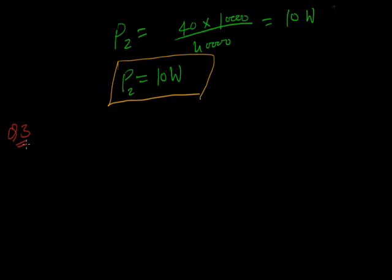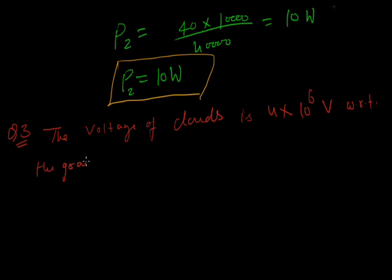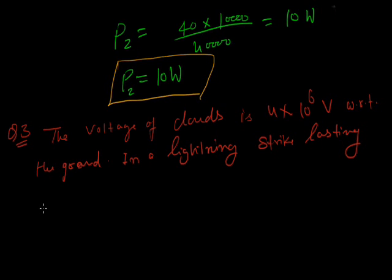A voltage of clouds is 4 into 10 raised to the power 6 volt with respect to the ground in a lightning strike lasting 100 milliseconds. The charge of 4 coulomb is delivered to the ground.